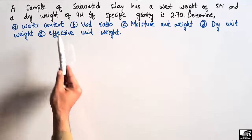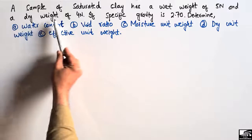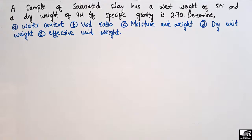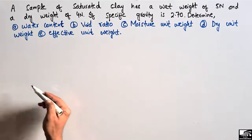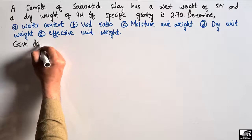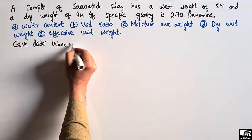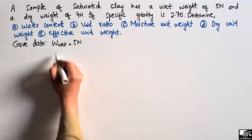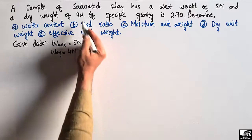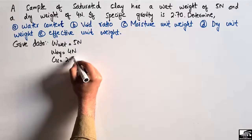We have to find out five unknowns for this soil sample, knowing only the dry weight, wet weight, and specific gravity. The given data is: wet weight of the soil = 5 Newtons, dry weight of the soil = 4 Newtons, and specific gravity GS = 2.70.